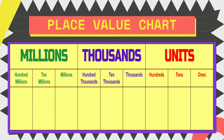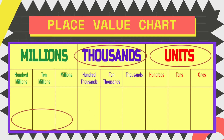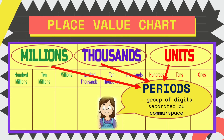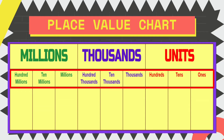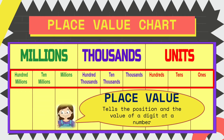A place value chart is a diagram that can help us in finding and comparing the place value of the digits in numbers. We have here names of periods, which are units, thousands, and millions. Periods are a group of digits separated by a comma or space. Under each period, we have the place value. Place value tells the position and the value of a digit in a number.